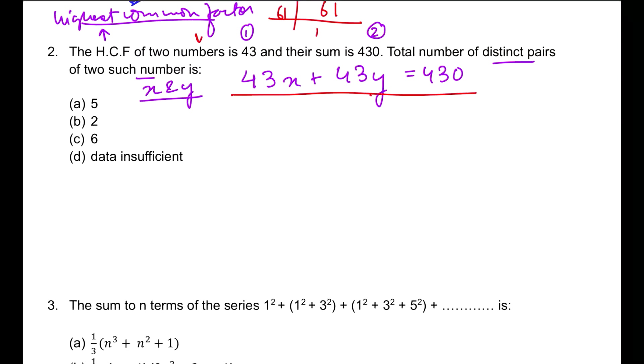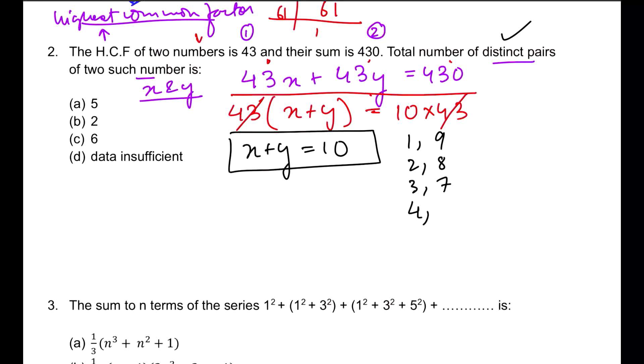Let's get started with the calculation. I see 43 is common, so I'll take it out: 43(X+Y) = 430. Dividing both sides by 43, I get X+Y = 10. Since they're asking for distinct pairs that add up to 10, I can have 1,9; 2,8; 3,7; 4,6; 5,5. These are the possibilities.